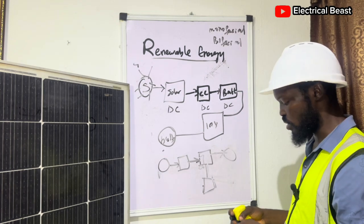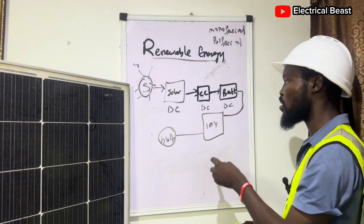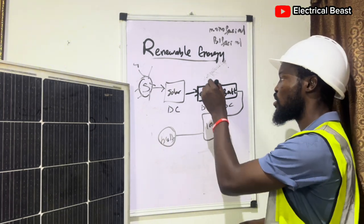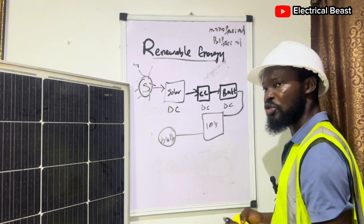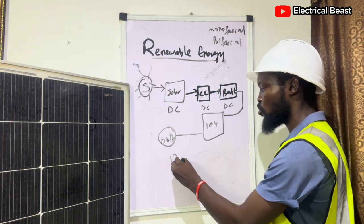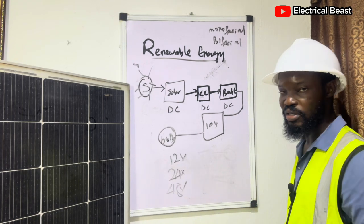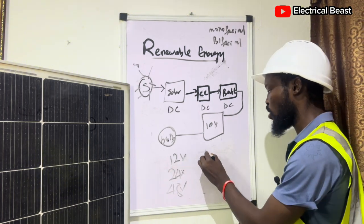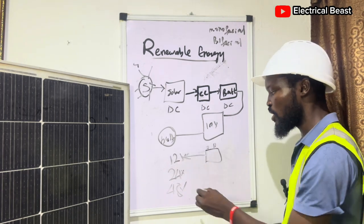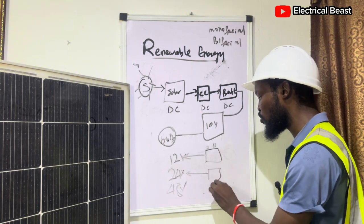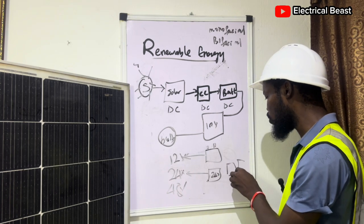For hybrid systems the flow is: sun → solar panels → inverter → battery → load. But it's very important for you to understand the regular setup that involves using the charge controller, either a PWM controller or an MPPT controller. Also know that inverters are rated in voltage — we have 12V, 24V, and 48V inverters.